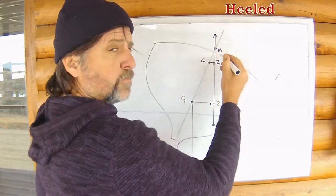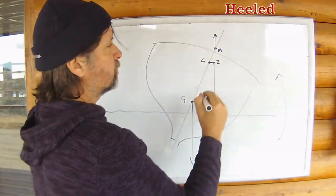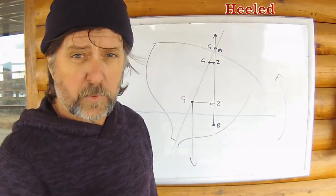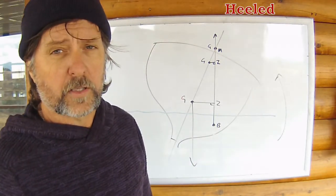If we continue to load the vessel up high or discharge weights from down low, G and M may end up being on the same spot. Neutral equilibrium, the vessel won't have any righting lever at all.